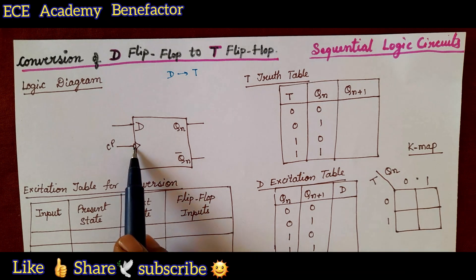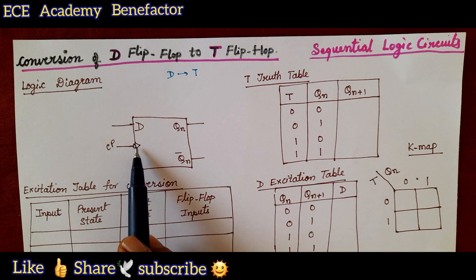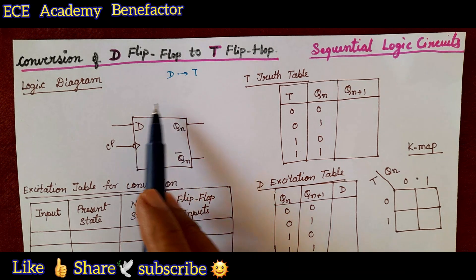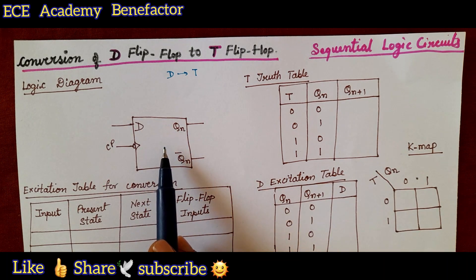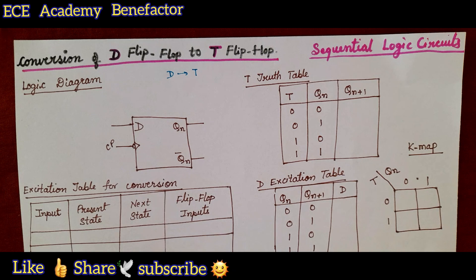A bubble is indicating that it is a negatively edge triggered flip-flop. D flip-flop is given. Now, this D flip-flop is to be converted to T flip-flop. For this we need an excitation table for the conversion.